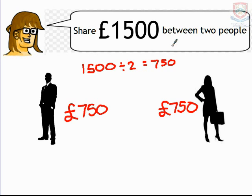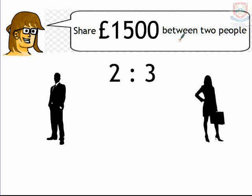But this assumes that they both get the same, and they both deserve the same. Ratio can change the balance between how things are shared around. If we assumed in this example that the person on the right did a little bit more work, it would seem fair that they receive more of the money. So we're given this ratio of 2 to 3.